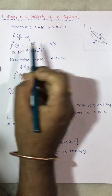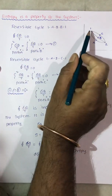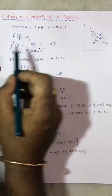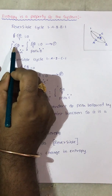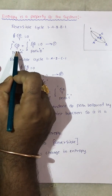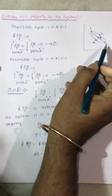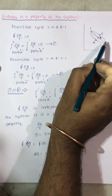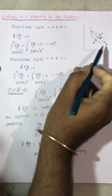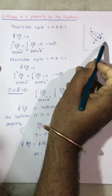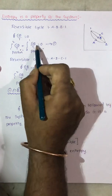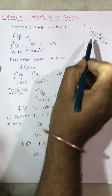Now the system is following from state point 1 to 2 by path A. The change in entropy, that is the integral from 1 to 2 of δq/T along path A, plus the integral from 2 to 1 of δq/T along path B, is equal to 0.